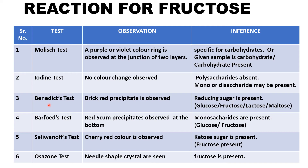Then I would perform Benedict's test — brick-red precipitate would be observed, showing that a reducing sugar is present: glucose, fructose, or lactose. Then I need to confirm whether it is a disaccharide or monosaccharide, so I perform Barfoed's test. Red scanty precipitates are observed at the bottom, so monosaccharide is confirmed.